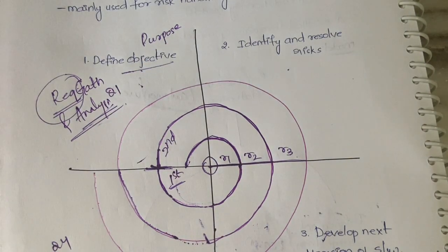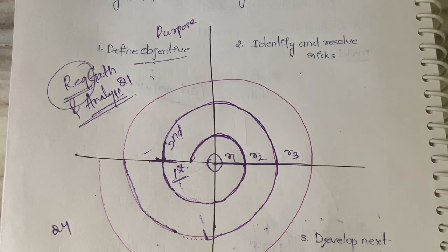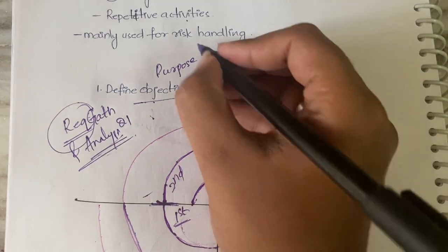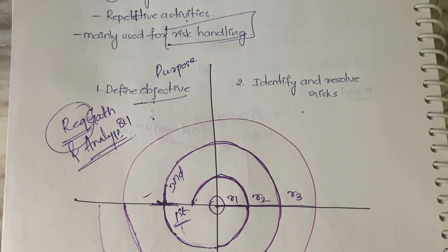Next, second: identify and resolve the risks. In the second stage, what you will do is you will identify all the risks. Because as I already said, this is mainly useful in case of risks. So the second step is you will identify all the risks and you will try to resolve those risks.